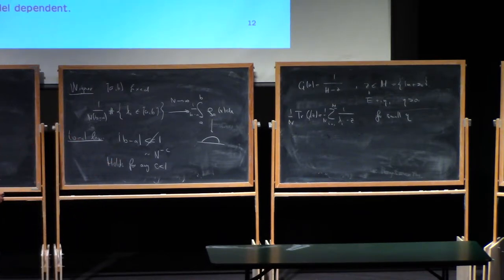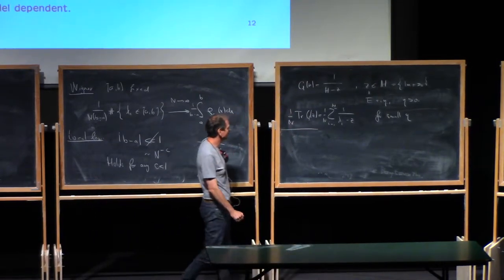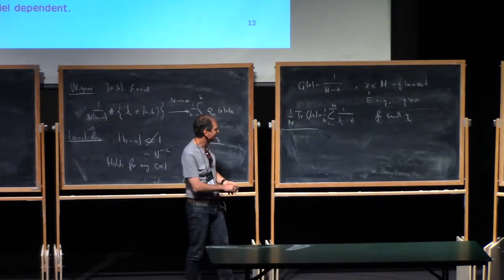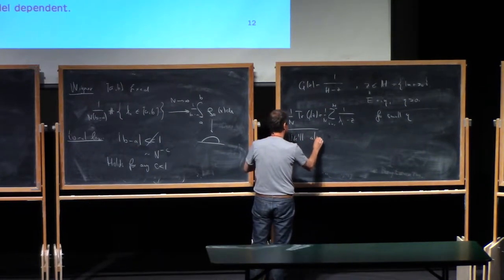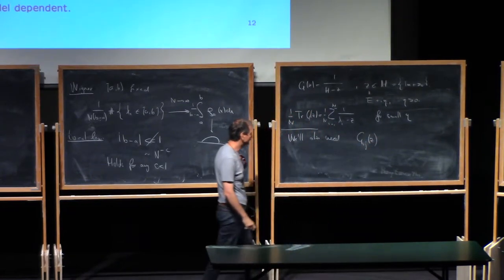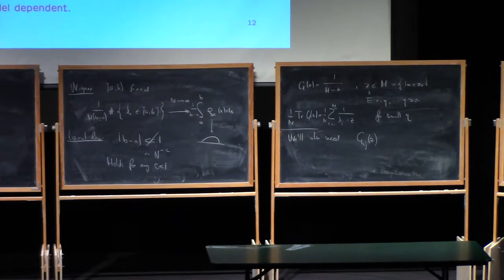When talking about local laws, you might think you are interested only in the trace of the resolvent, but actually we are also interested in the matrix elements G_{ij}(z). If you understand the matrix elements, then the trace is understood, but the other way around is not clear at all — the trace has extra averaging over the diagonal elements and contains much less information in principle.